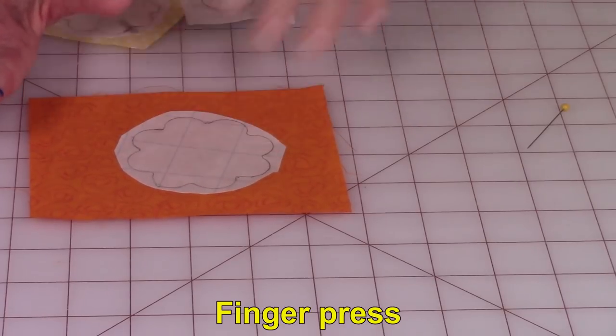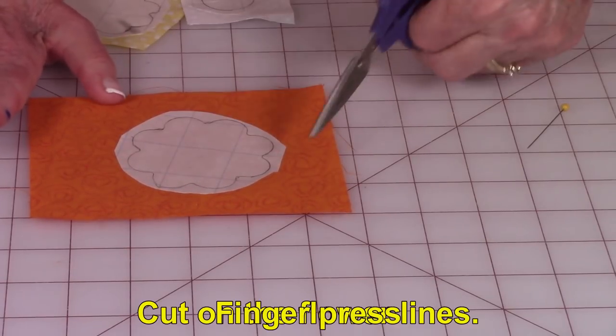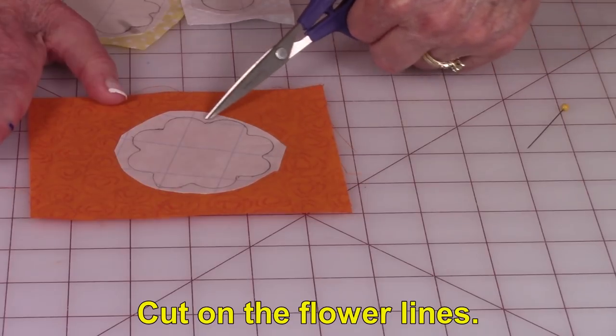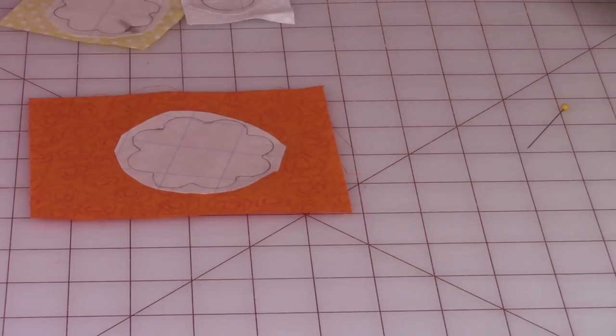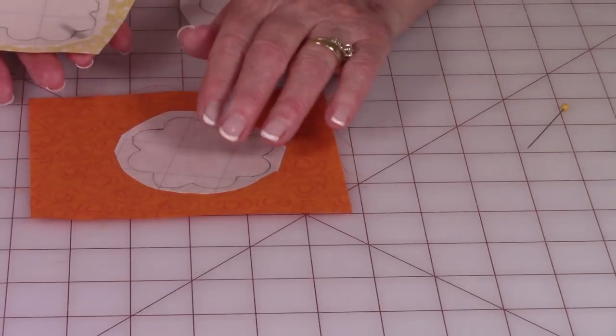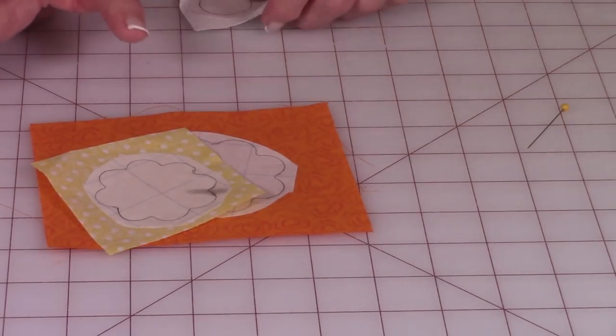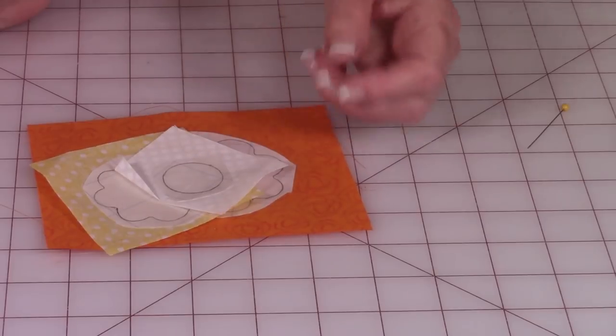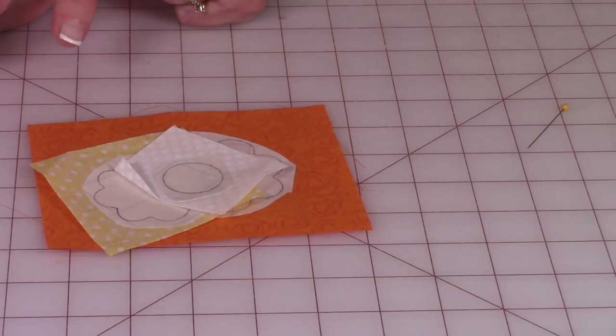Then take this and put it on the back side and finger press it down. And then after you've done that, now you're going to cut right on these drawn lines. So here is my larger flower, this is my smaller flower, and I'm using white for the very center of the flower.